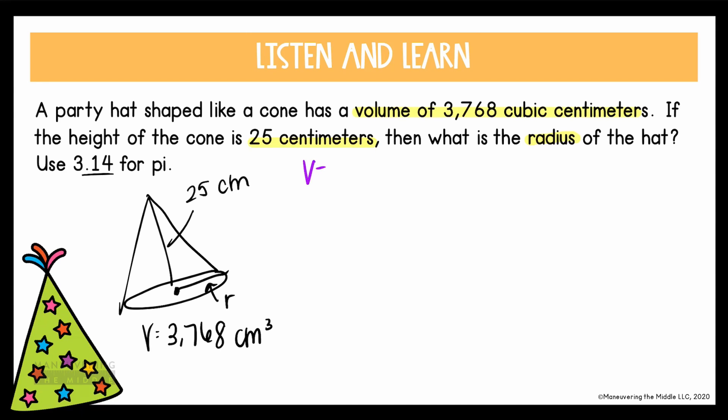So as always, let's start with the formula. The volume is 1/3 area of the base times the height. We go ahead and write the area of the base formula is πr². So now we want to substitute in all of the variables that we're given, starting with V. The volume was given to us, so we'll write it in here on the left. We're going to use 3.14 for π. We do not know the radius, so that'll stay r², and we know the height is 25.